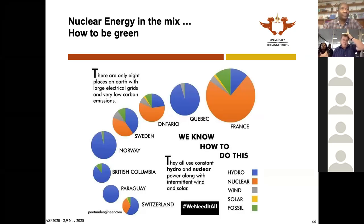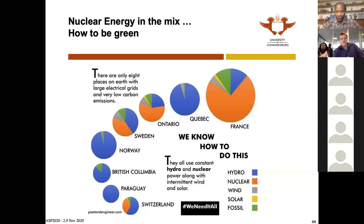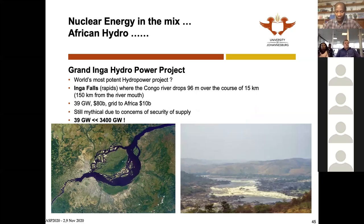Zooming into nuclear: we must have carbon-free power, so we can either have hydro or nuclear. Looking at countries claiming to be carbon-free, the foremost carbon-free nations are those with nuclear unless they are very lucky with a lot of hydro. Your options are nuclear or hydro.